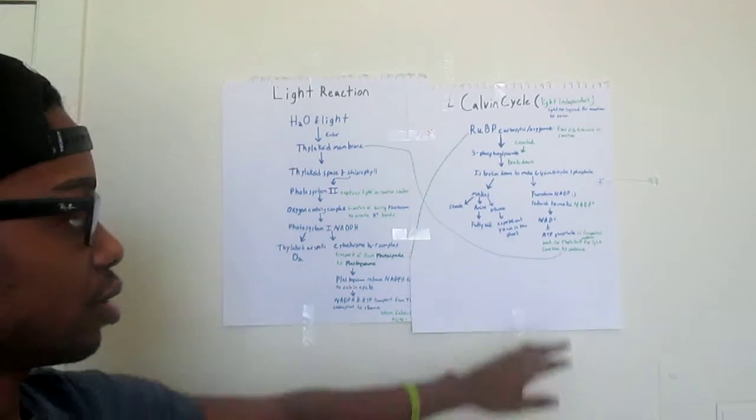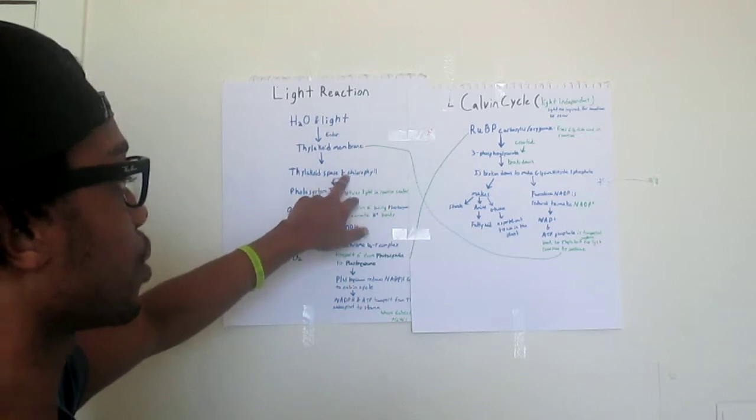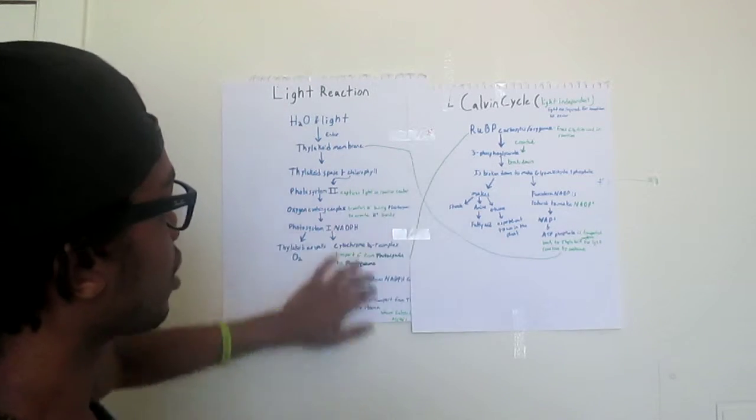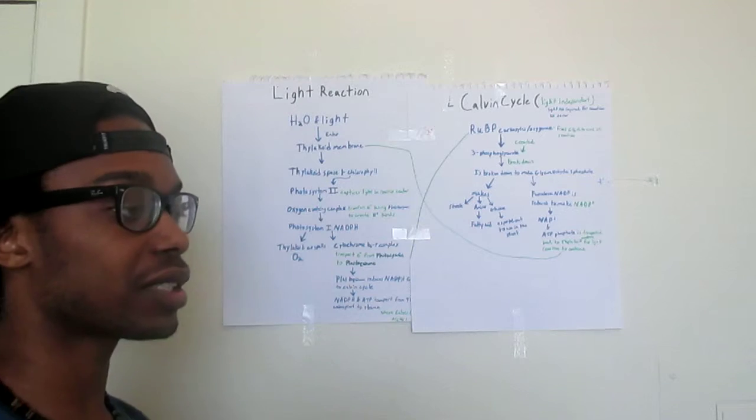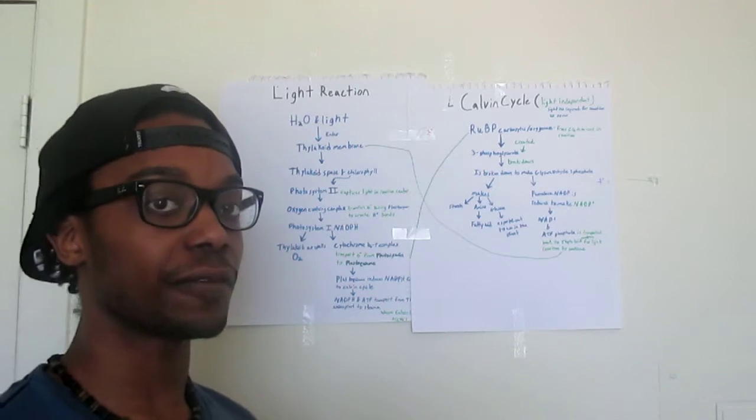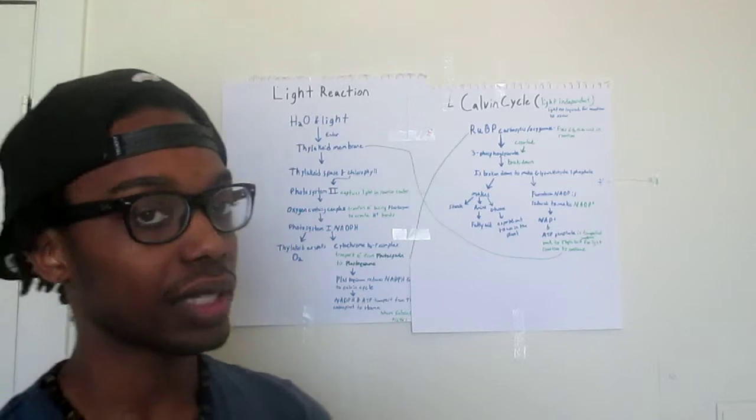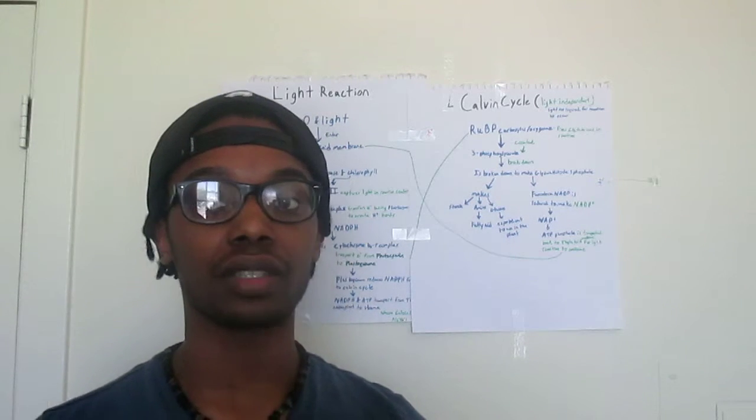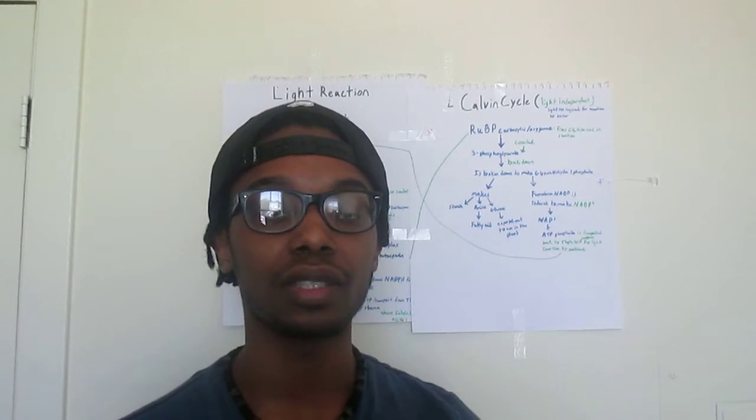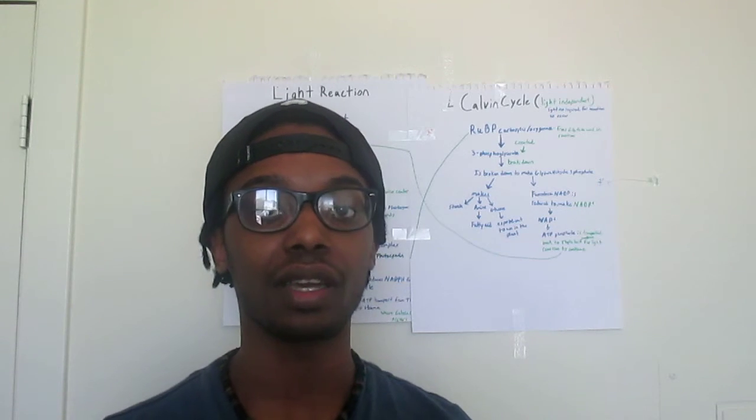It's basically going back and forth like an infinity sign. So that's basically it for the light reaction and the Calvin cycle. My name is Anthony Williams again, and have a good day.